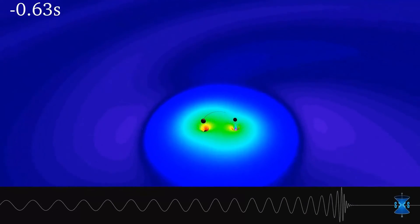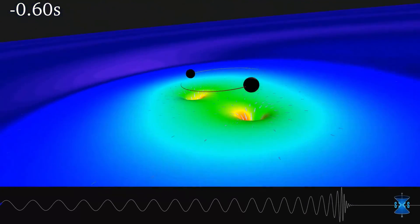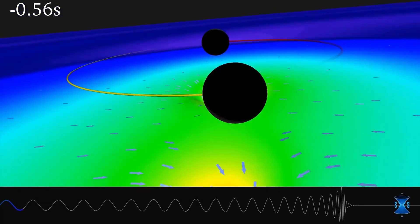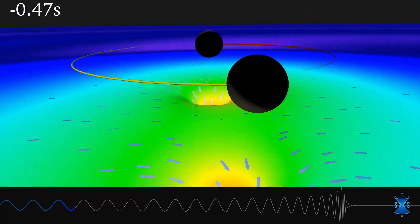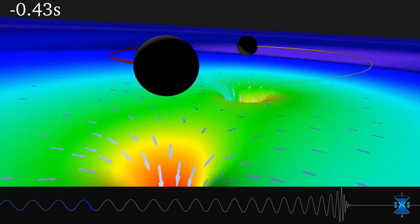We just reached to witness two black holes orbiting each other. One is 35 times the mass of the sun and the other equals 30 sun's mass.